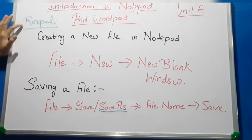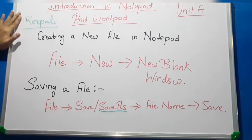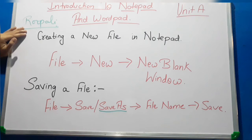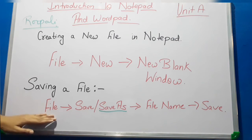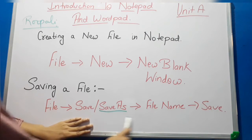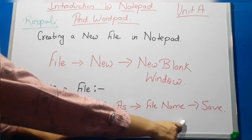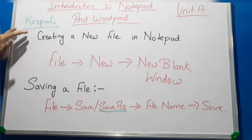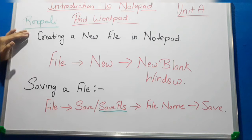But if you need to make some changes to this file again, you will open the file, make the changes, and then to save it again you go to File menu and click Save. You don't have to repeat the Save As steps — just click Save and all modifications will be saved.